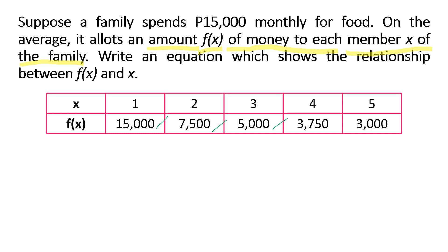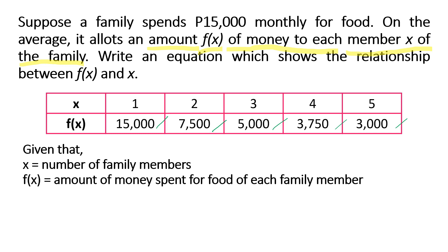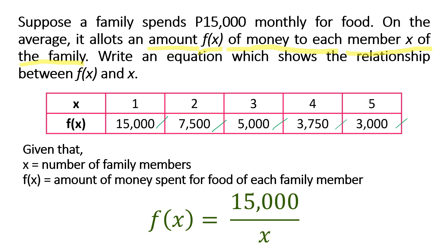So 15,000 will be divided by the number of family members. For four members, each receives 3,750 pesos, and for five members, each gets 3,000 pesos. Given that x is the number of family members and f(x) is the amount of money spent on food per member, the equation showing their relationship is f(x) = 15,000 / x. This is a rational function, since both the numerator and the denominator are polynomials.